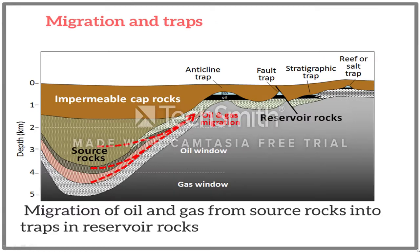Migration and traps. Hydrocarbons are lighter than water; gas and oil rise by circulating between the mineral grains of the rock. This slow, constant movement away from the source rock is called migration. Oil and gas traps, sometimes referred to as petroleum traps, are below-ground traps where a permeable reservoir rock is covered by some low-permeability cap rock. All oil and gas deposits are found in structural or stratigraphic traps.